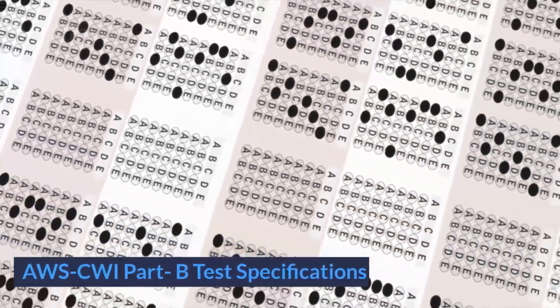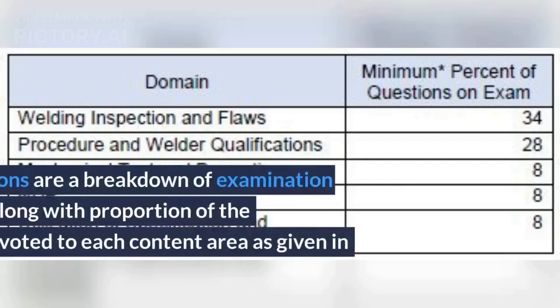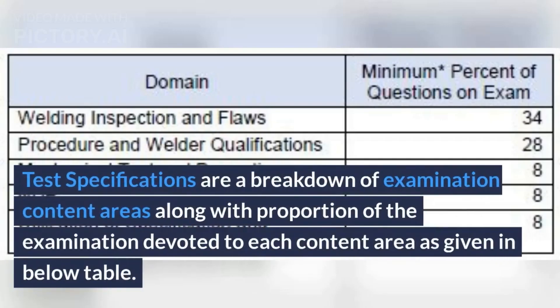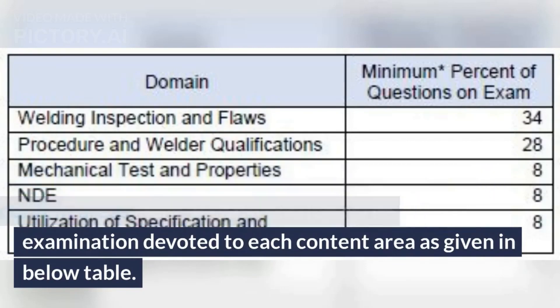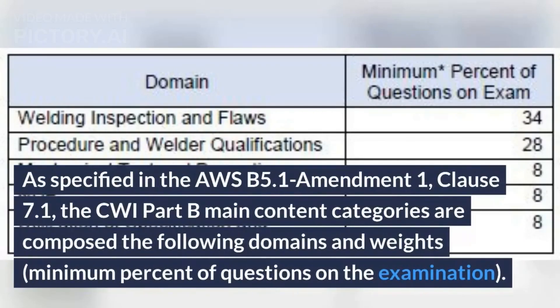AWS CWI Part B Test Specifications. Test Specifications are a breakdown of examination content areas along with the proportion of the examination devoted to each content area, as given in the table below. As specified in AWS B5.1 Amendment 1, Clause 7.1, the CWI Part B main content categories are composed of the following domains and weights.